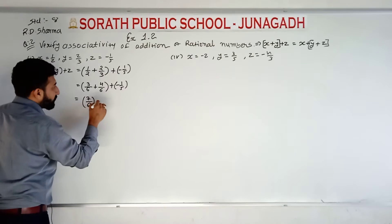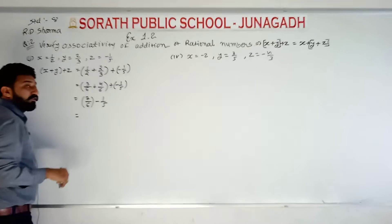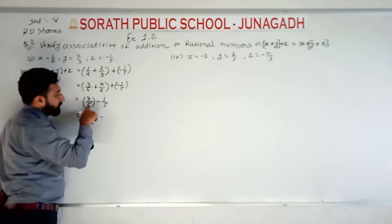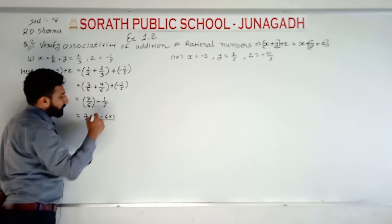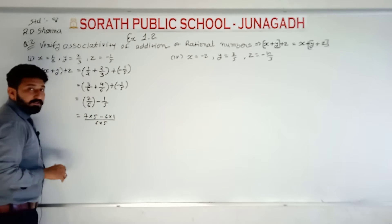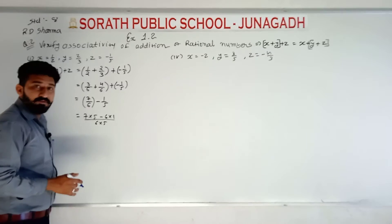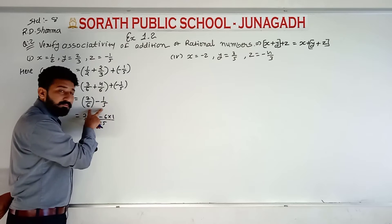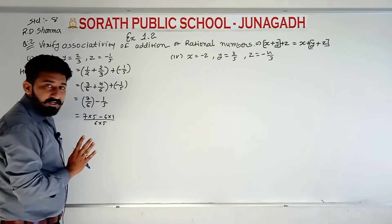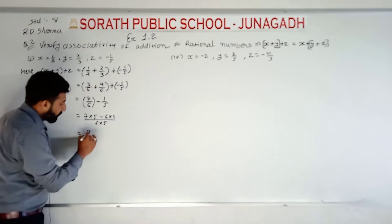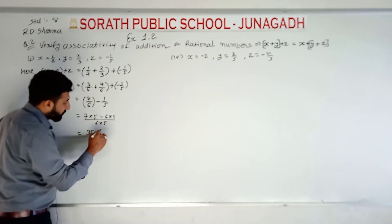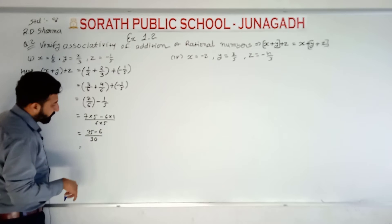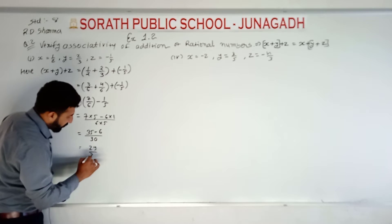Here, plus minus 1 upon 5. Now using cross multiplication: 7 multiplied by 5, minus 6 multiplied by 1, and the denominator is 6 multiplied by 5. So 35 minus 6 upon 30 — that is 35 minus 6, which becomes 29 upon 30.